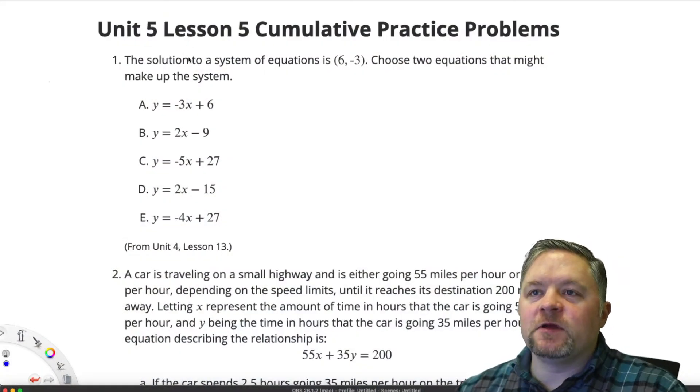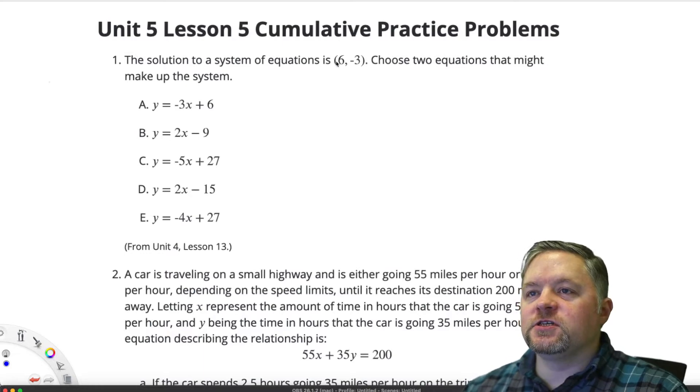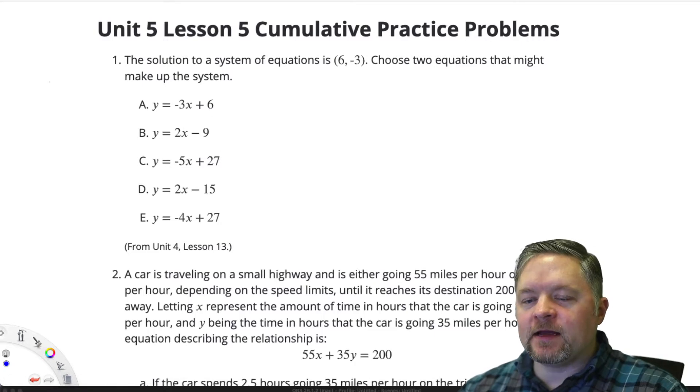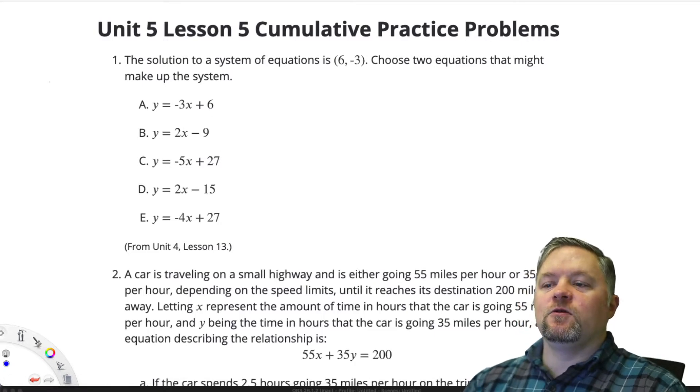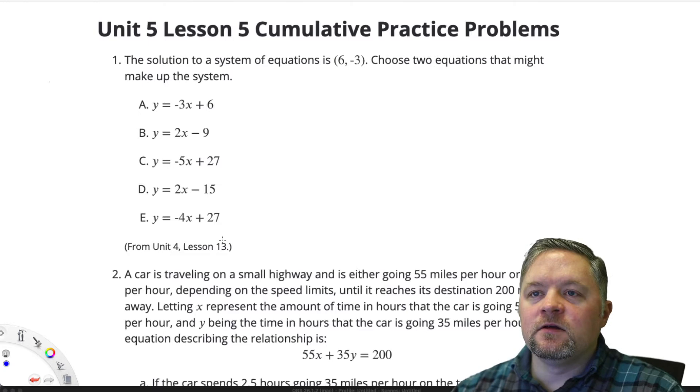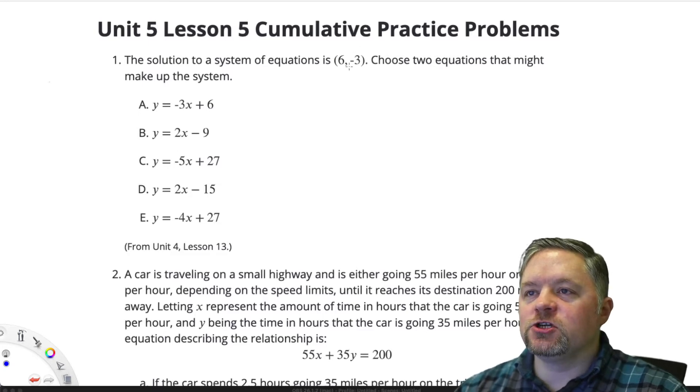Okay, first problem here. The solution to a system of equations is 6, negative 3. Choose two equations that might make up this system. So what we need are equations whose solution is the point 6, negative 3.